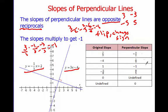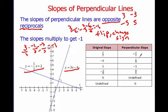Over here I have some examples of slopes and slopes of lines perpendicular to them. For example, if I gave you a slope of 2 thirds, the slope of a perpendicular line would be negative 3 halves — we flip it and change the sign. If I gave you a slope of negative 4, the perpendicular slope would be positive 1 fourth.